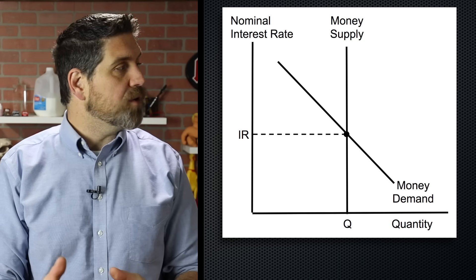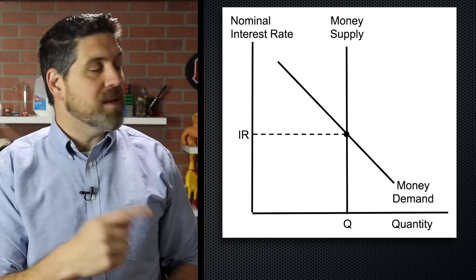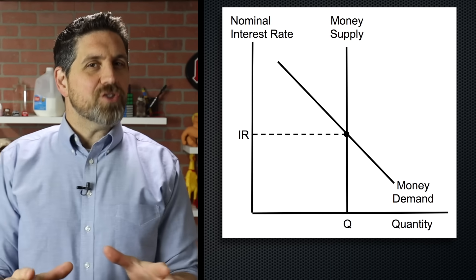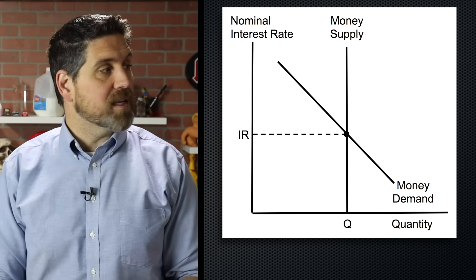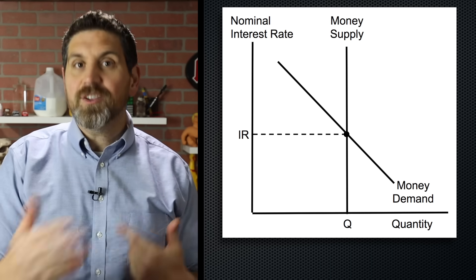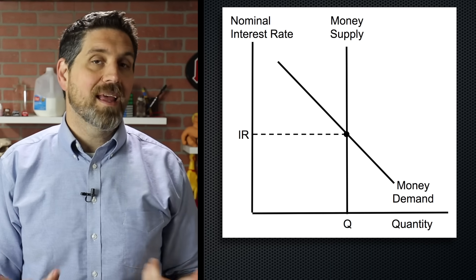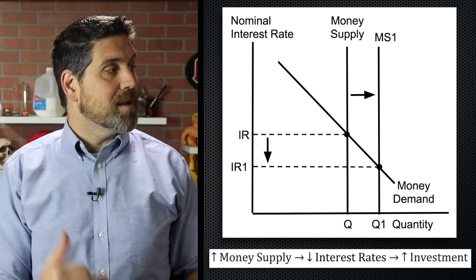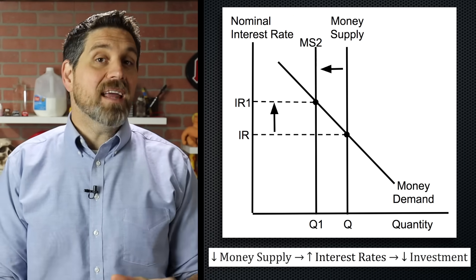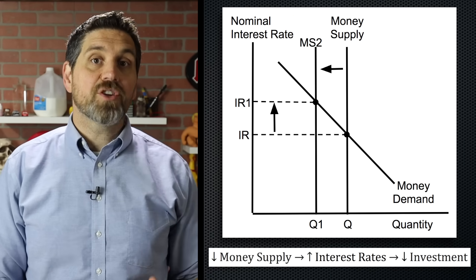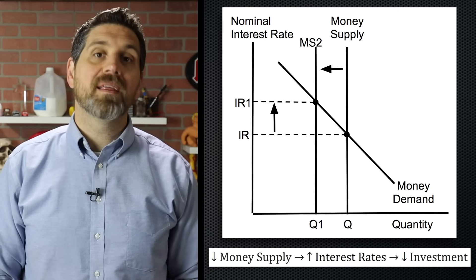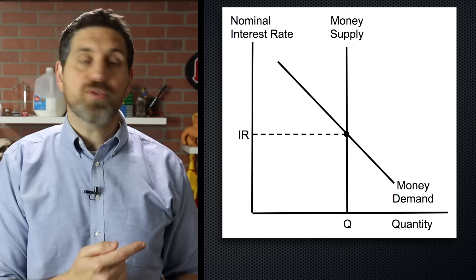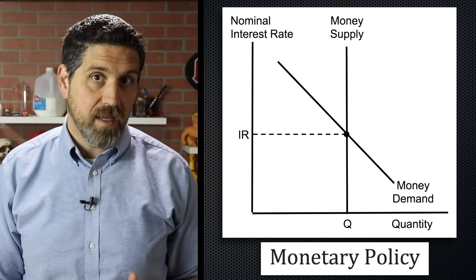Let's do an overview. The money market graph that you've already learned shows a supply and the demand for money, and that sets the equilibrium nominal interest rate. The interest rate determines how much investment spending and consumer spending on interest-sensitive consumer goods takes place in the economy. So if the money supply increases, the interest rate's gonna fall, and that will lead to more investment and more spending. And if the money supply decreases, that interest rate will go up, and that'll lead to less investment and less spending. This process of controlling the money supply to affect interest rates is called monetary policy.